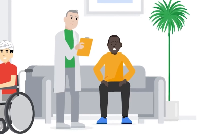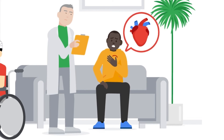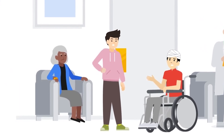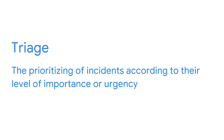For example, patients with a life-threatening condition such as a heart attack will receive immediate medical attention, but a patient with a non-life-threatening condition like a broken finger may have to wait before they see a doctor. Triage helps to manage limited resources so that hospital staff can give immediate attention to patients with the most urgent conditions. Triage is also used in security. Before an alert gets escalated, it goes through a triage process, which prioritizes incidents according to their level of importance or urgency.